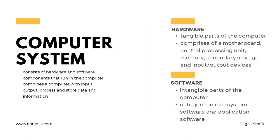Hardware refers to the physical, tangible parts of a computer that a computer system requires to function. It comprises of a motherboard, central processing unit (CPU), main memory which is the random access memory (RAM), secondary storage, and input or output devices such as the keyboard, monitor, and disk.